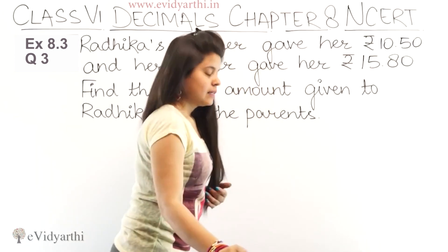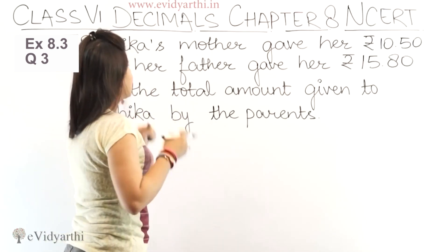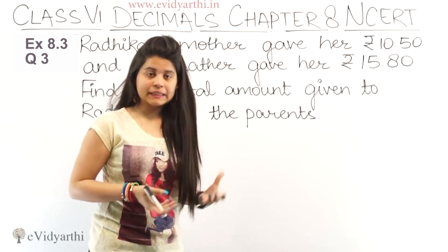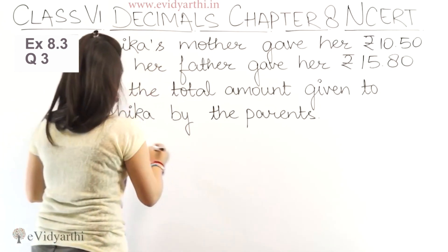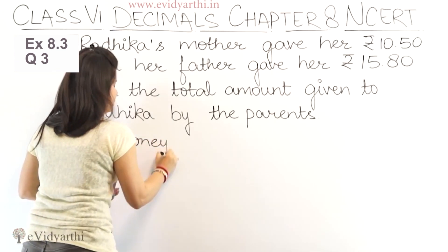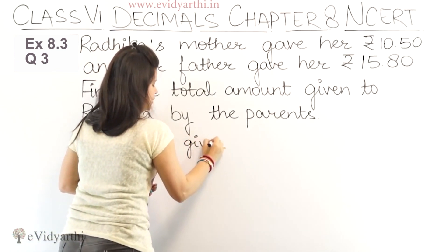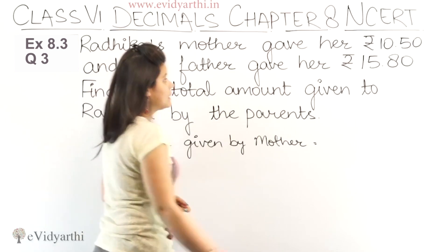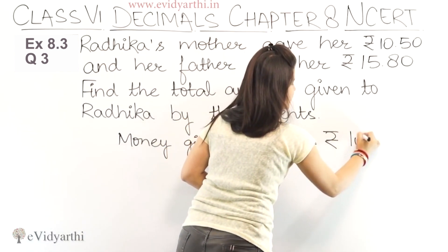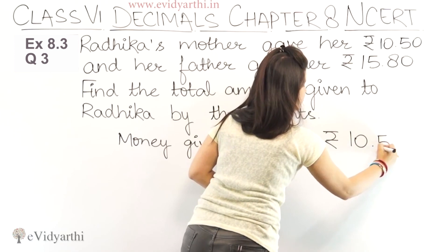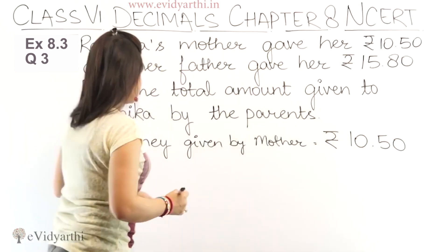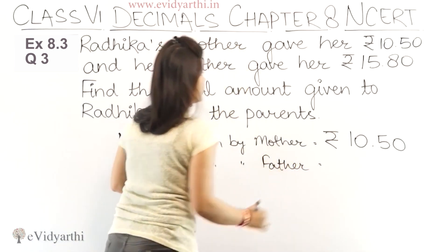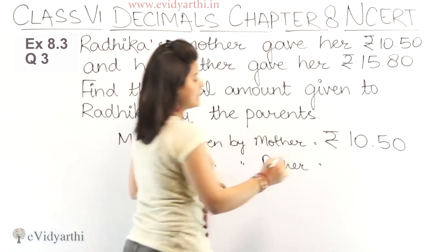Let's start. This is expressed in the statement, so we can write it as: money given by mother equals rupees 10.50, and money given by father equals rupees 15.80.